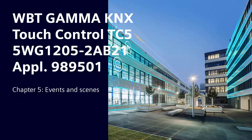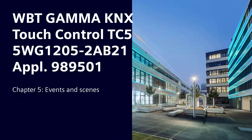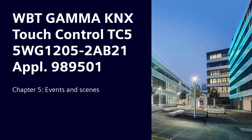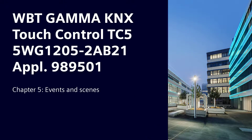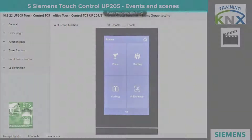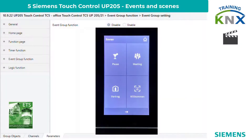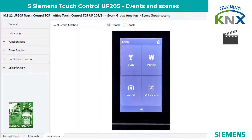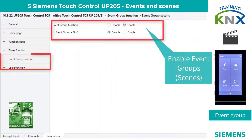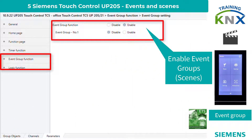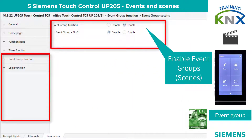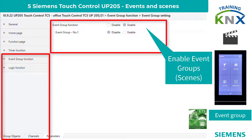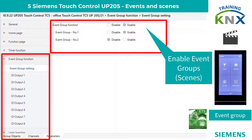Chapter 5: Siemens Gamma KNX Touch Control TC5 — Function Event Group, Scene Control. The Siemens KNX Touch Control TC5 has a function block called Event Group Function. This can be used to call up classic scenes but also event program sequences.